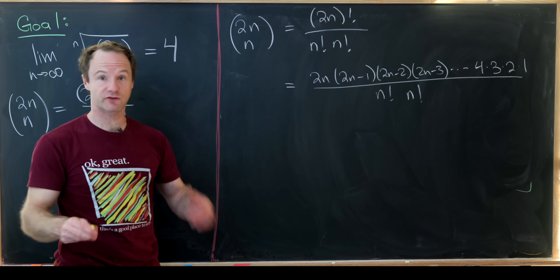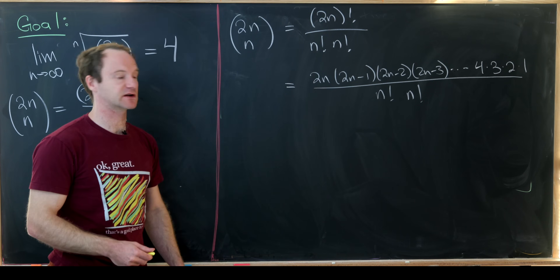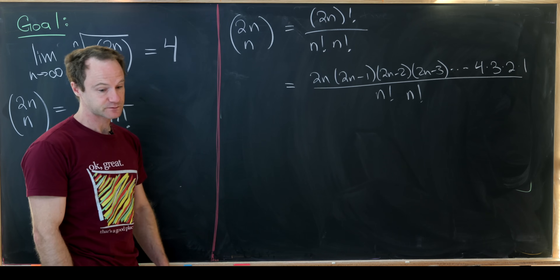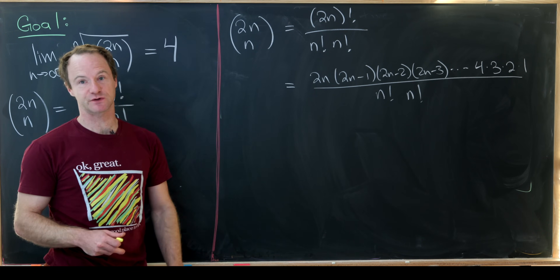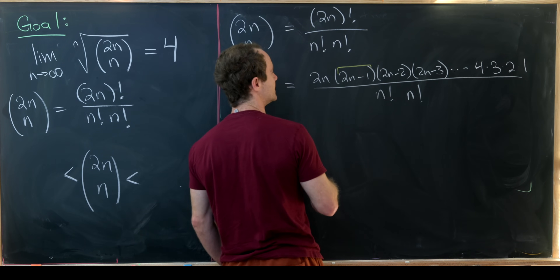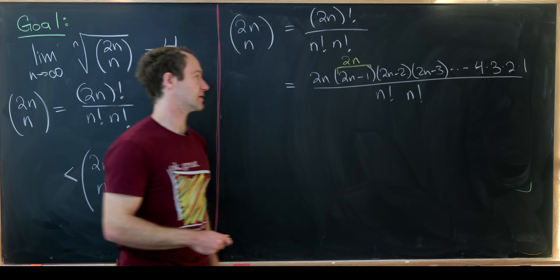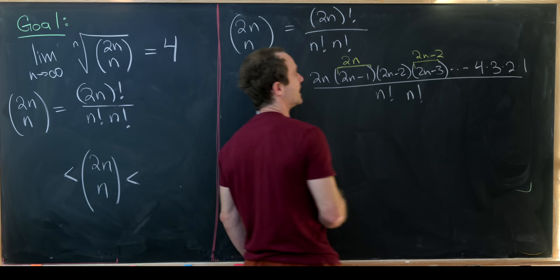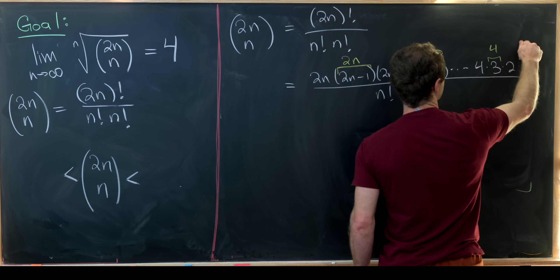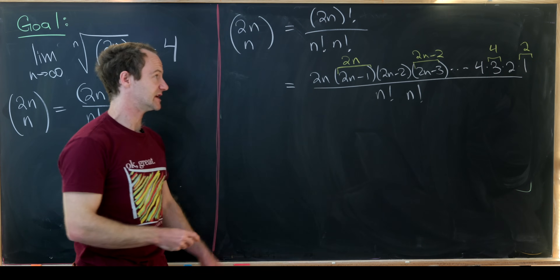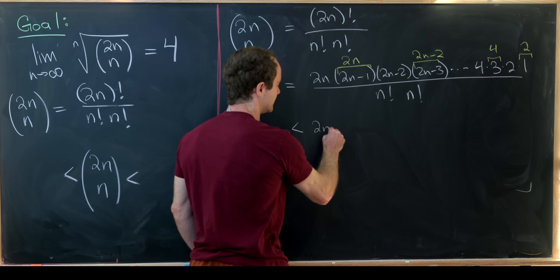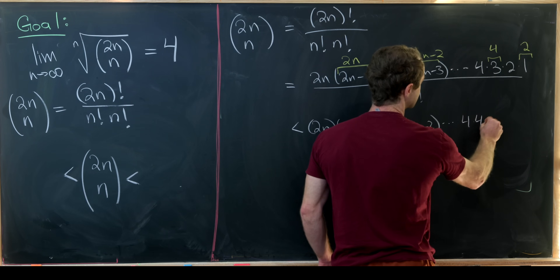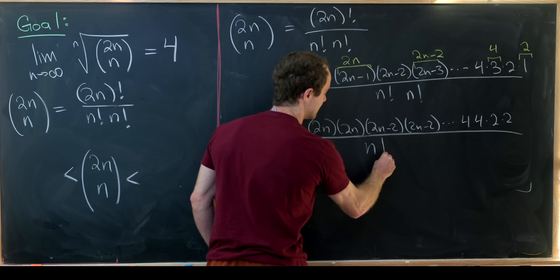We're going to approach this by replacing terms in the product of the numerator with either larger or smaller numbers depending on whether we're trying to bound this from above or below. We'll start by replacing with larger numbers. We'll take 2n minus 1 and replace it with 2n, take 2n minus 3 and replace it with 2n minus 2, and replace 3 with 4 and 1 with 2. That gives us something larger: 2n times 2n times 2n minus 2 times 2n minus 2, all the way down to 4 times 4 times 2 times 2, over n factorial times n factorial.